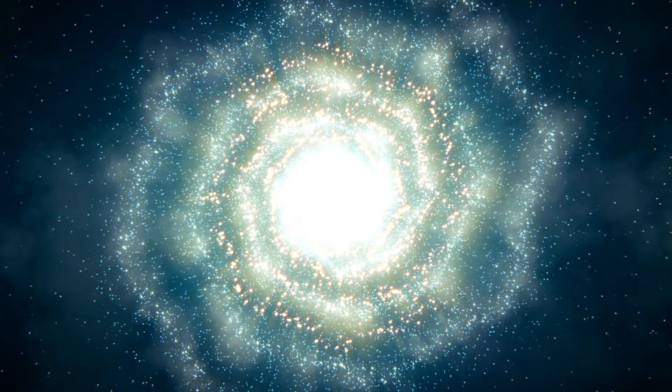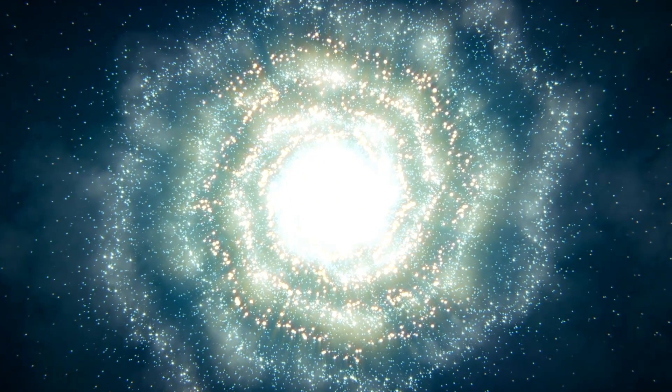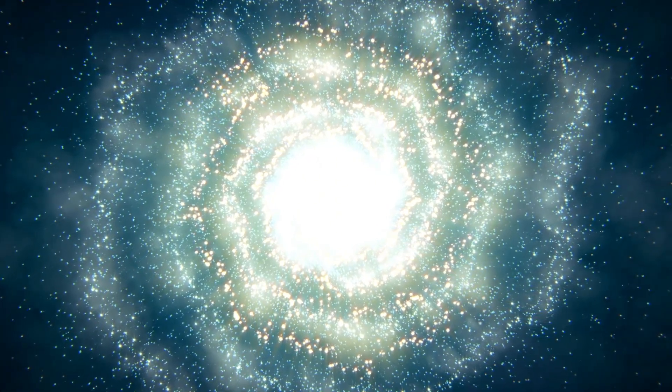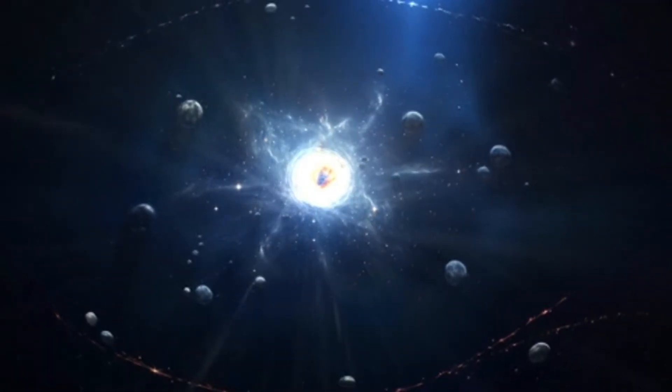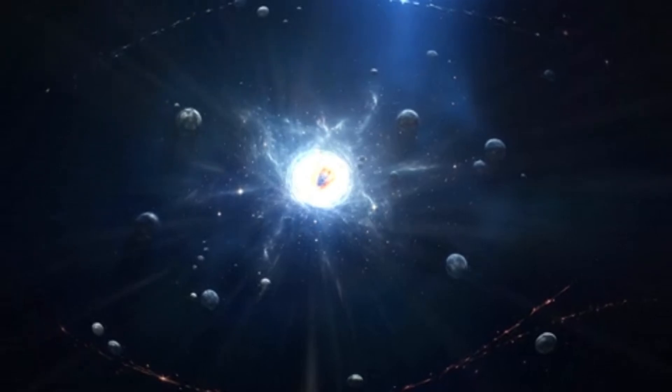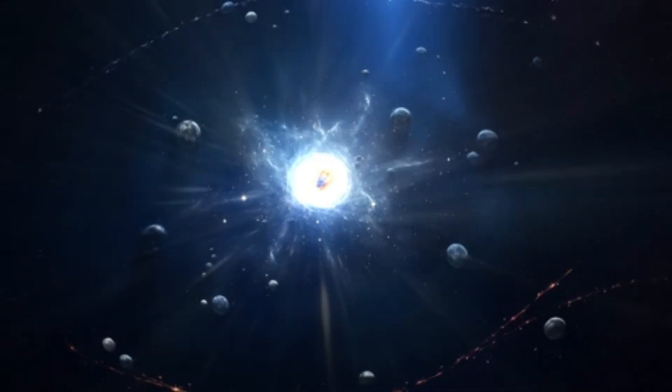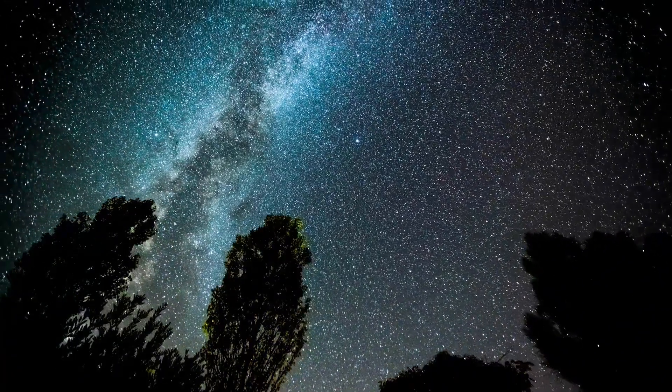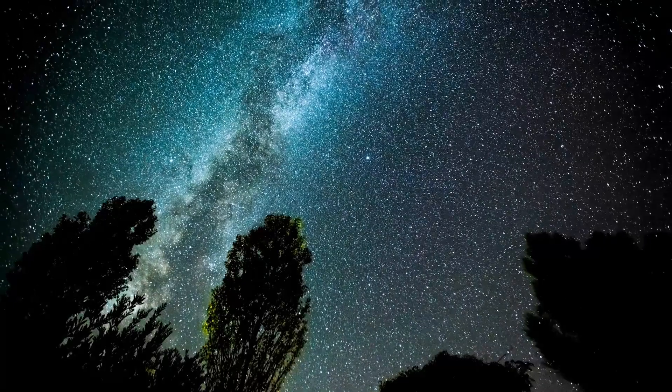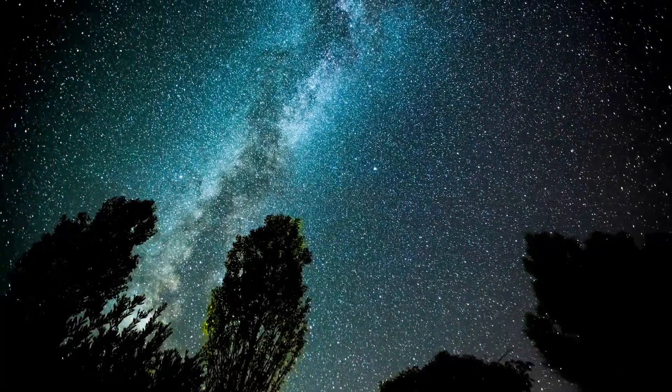Scientists are still figuring out why the universe began in such an ordered state. Even in the tiny world of quantum mechanics, which deals with really small particles, there's a time arrow. The way particles change over time seems to be symmetrical, but when we observe them, things become irreversible. Brian believes that it's not just a physics thing, our brains also experience time in one direction. We remember the past, live in the present, and think about the future in a sequence. This mental arrow of time is connected to how we see the external world's arrow of time.